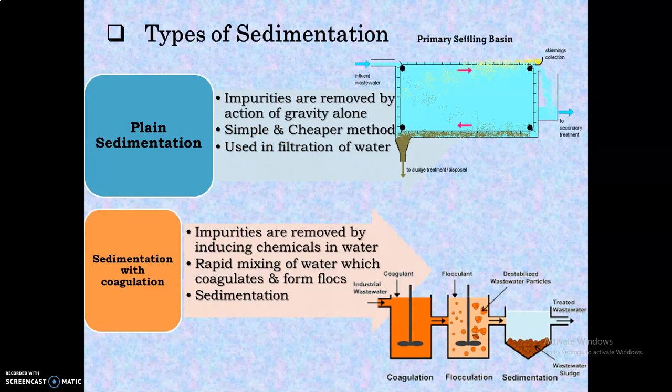There are two types of sedimentation: plain sedimentation and sedimentation with coagulation. In plain sedimentation, impurities are removed by the action of gravity alone. The water is allowed to stay in still water conditions where, because of gravity, the impurities are removed. It is a simple and cheaper method and is used in the filtration of water.